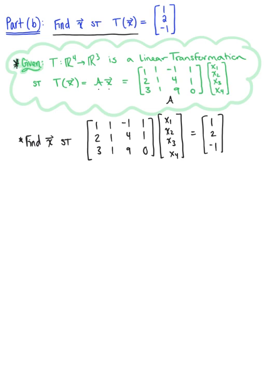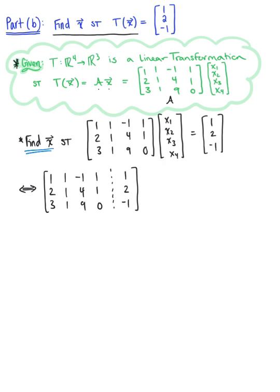To find this vector x, we convert the nonhomogeneous equation to the equivalent augmented matrix — matrix A augmented with [1, 2, -1] — and row reduce to reduced echelon form. Starting with the first pivot position, we use it to eliminate entries below it: we do -2 times row 1 plus row 2, and -3 times row 1 plus row 3.